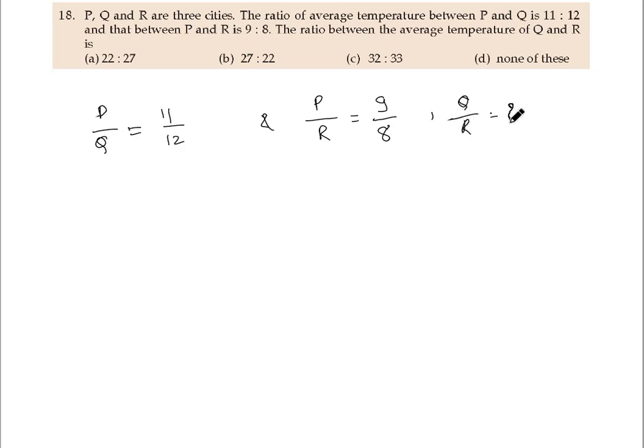Q by R? Hame kya pata hai? In any ratio, if we multiply the numerator and denominator by the same constant, it doesn't change, because P by P equals one, so there's no impact.